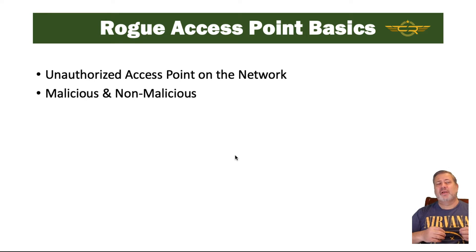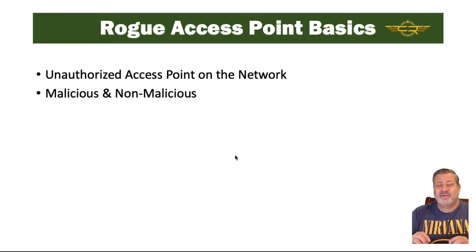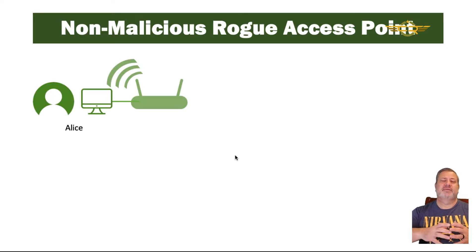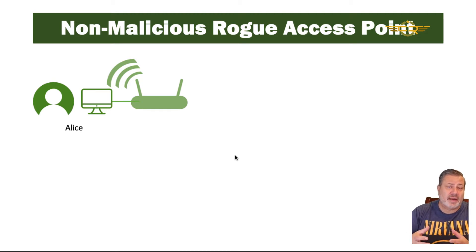A rogue access point is an unauthorized access point that has been joined to the network. Many times this is either malicious or non-malicious, depending on the intent of the person who's adding the rogue access point. In some cases, normal end users on your network will add access points to try to increase the usability of the network.